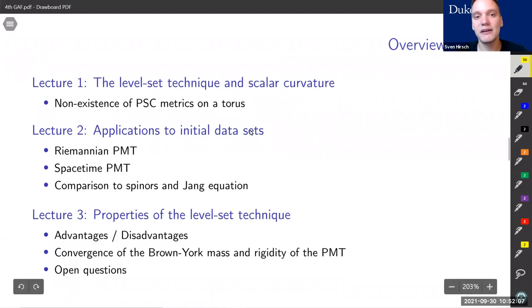Finally, in my third lecture, we're going to focus on the question: what if we have a result we want to prove involving scalar curvature, what is the best technique to tackle it with? Is it minimal surfaces, spinors, or level sets? I'm going to talk about advantages and disadvantages, then give you two examples where it's advantageous to use the level set technique, including a convergence result for the Brown-York mass and rigidity of both the spacetime and the hyperbolic positive mass theorem. I'm also going to mention a couple of open questions.